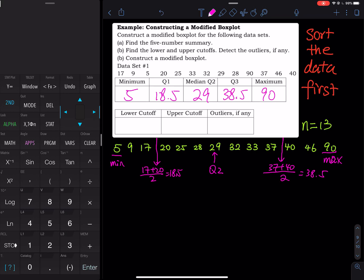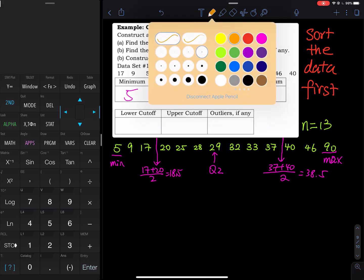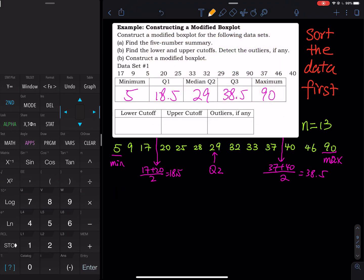So lower cutoff and upper cutoff. So now we calculate the lower cutoff. But before we calculate the lower cutoff, we have to find the IQR. So the IQR, you take Q3 minus Q1, which is 38.5 minus 18.5, and then that equals to 20. So you have 38.5 minus 18.5 equals to 20.